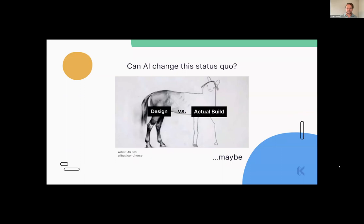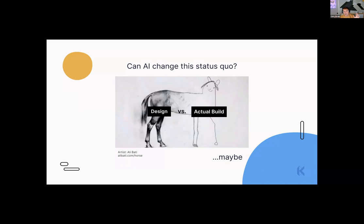What are we really trying to do here? We're trying to change the way we build our products — to make the things we create in the land of design intent actually match what we create for the products themselves. This is my favorite analogy: you can make the most beautiful thing in the world, but does that actually show up in production? That's the biggest question.